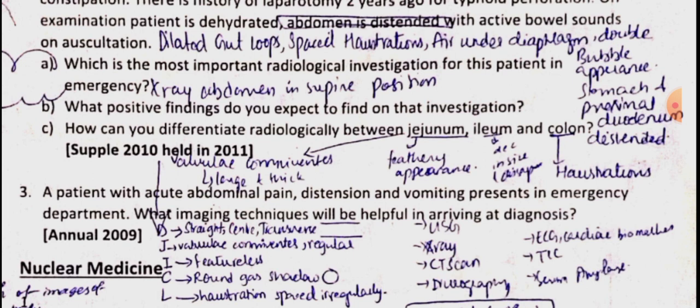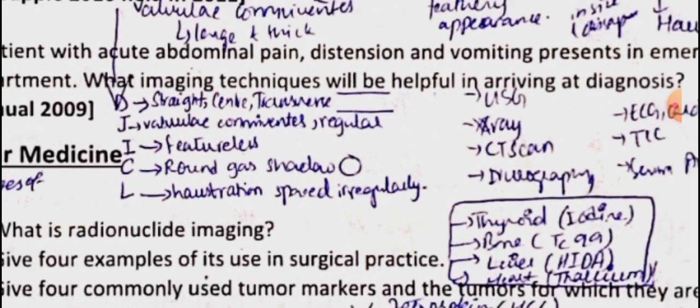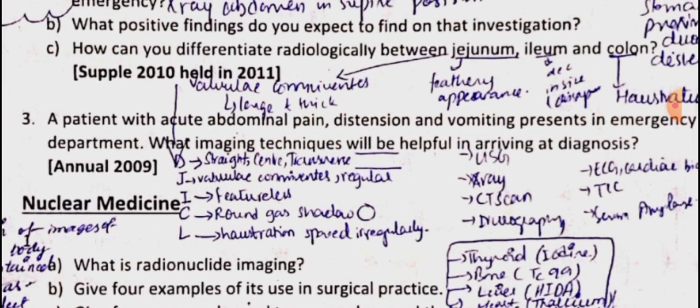For a patient presenting with acute abdominal pain, distension, and vomiting, diagnosis is made using ultrasound, X-ray, CT scan, IV urography, ECG, cardiac markers, TLC, and serum amylase.